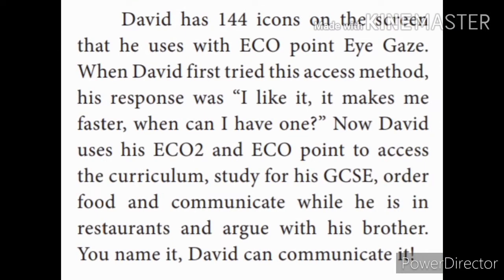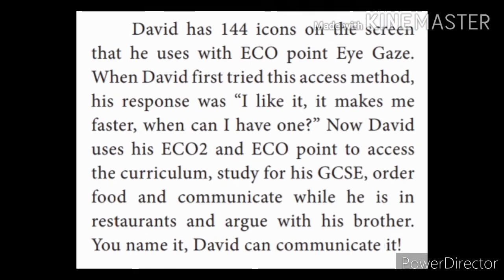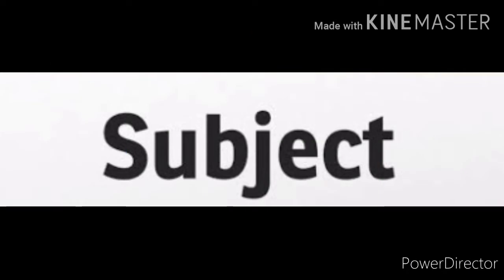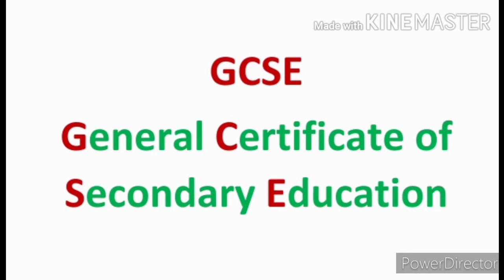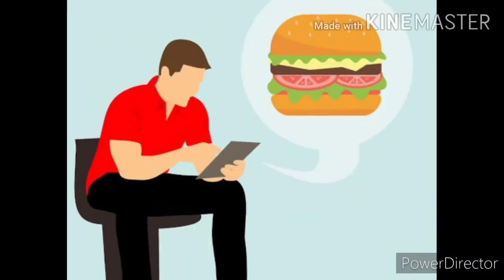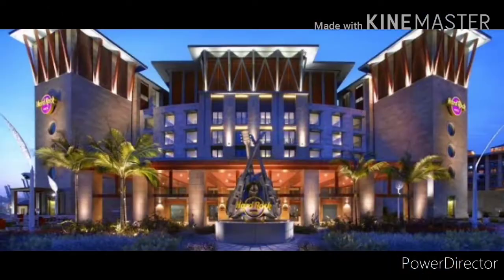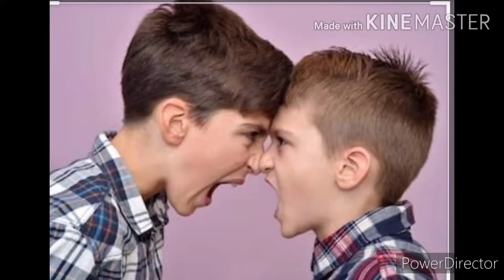Now David uses his Eco2 and EcoPoint to access the curriculum, study for his GCSE, order food and communicate while he is in restaurants, and argue with his brother. You name it, David can communicate it. By using this EcoPoint device, David could access the curriculum — which means subjects — study for his GCSE, order food and drinks in restaurants such as hotels or cafes, and even argue with his brother.